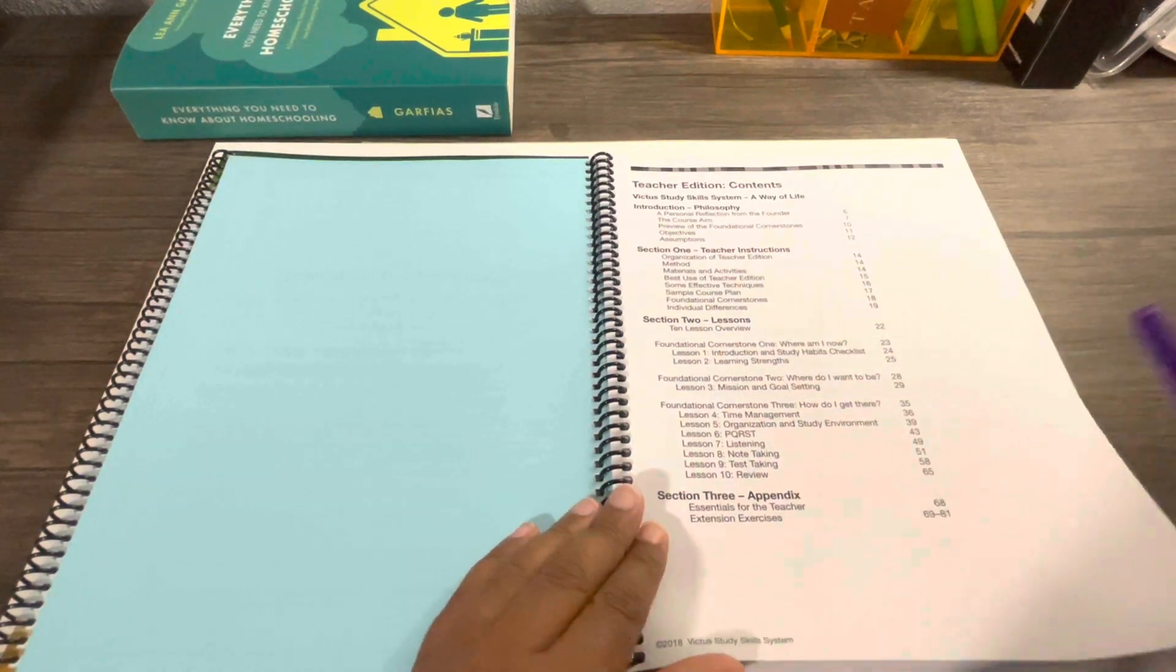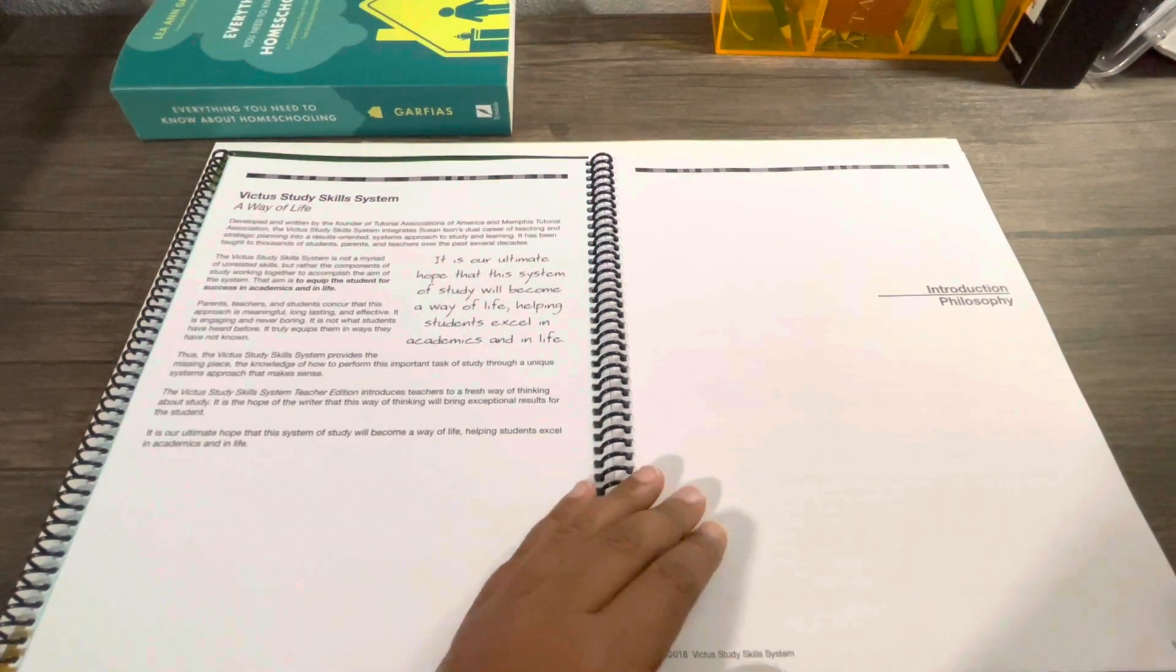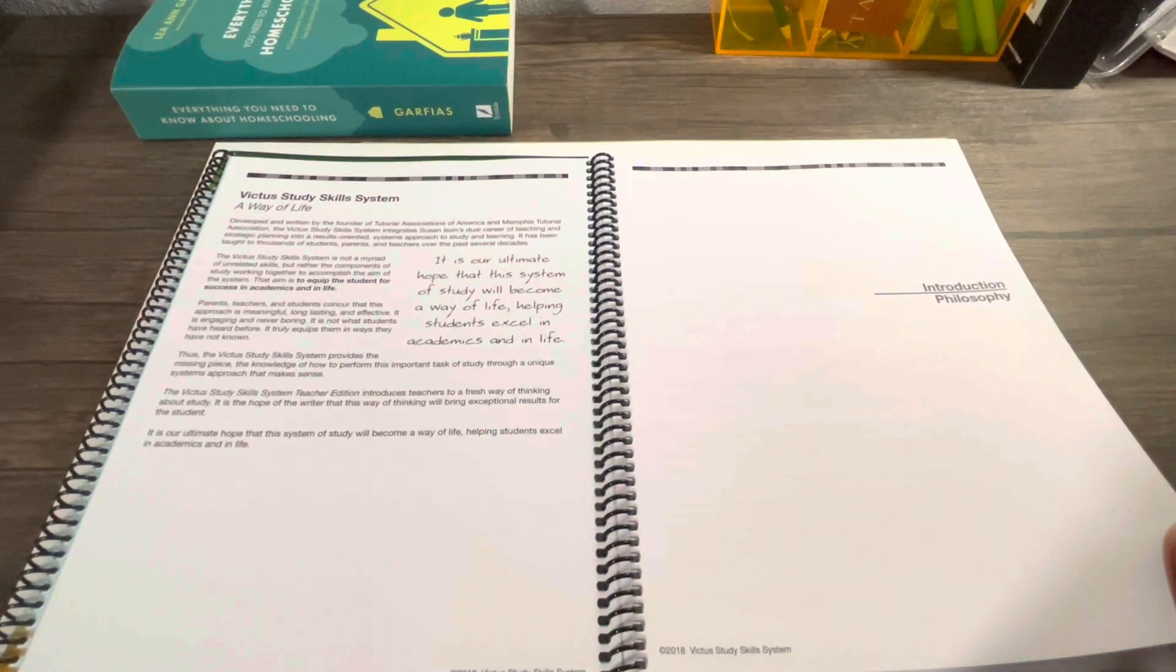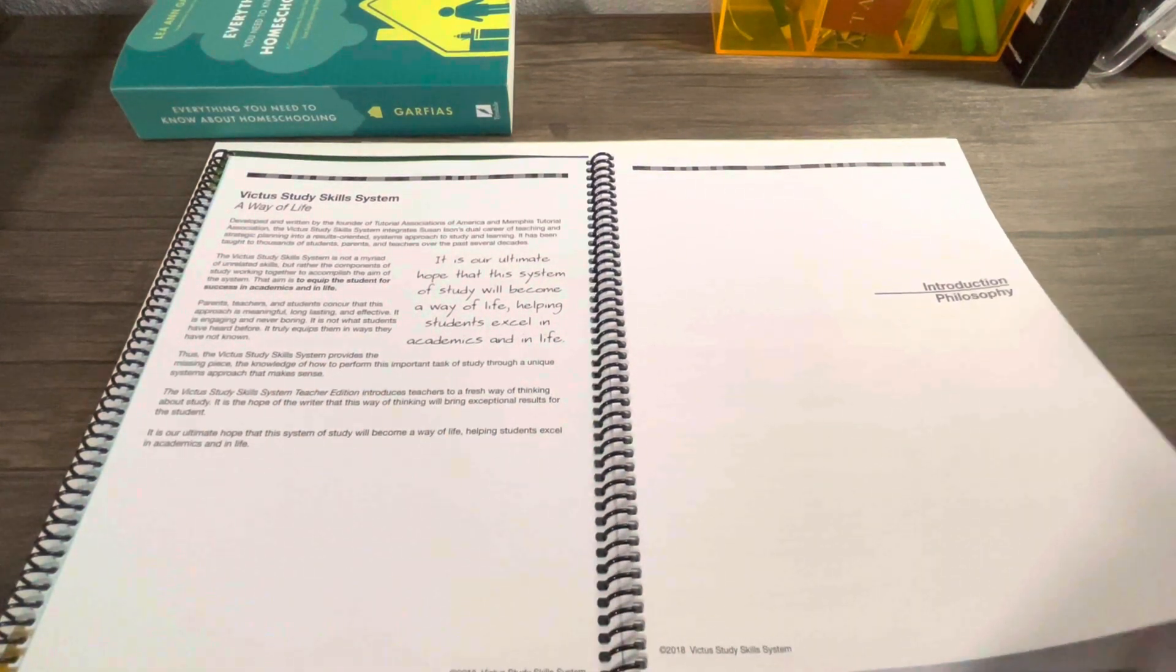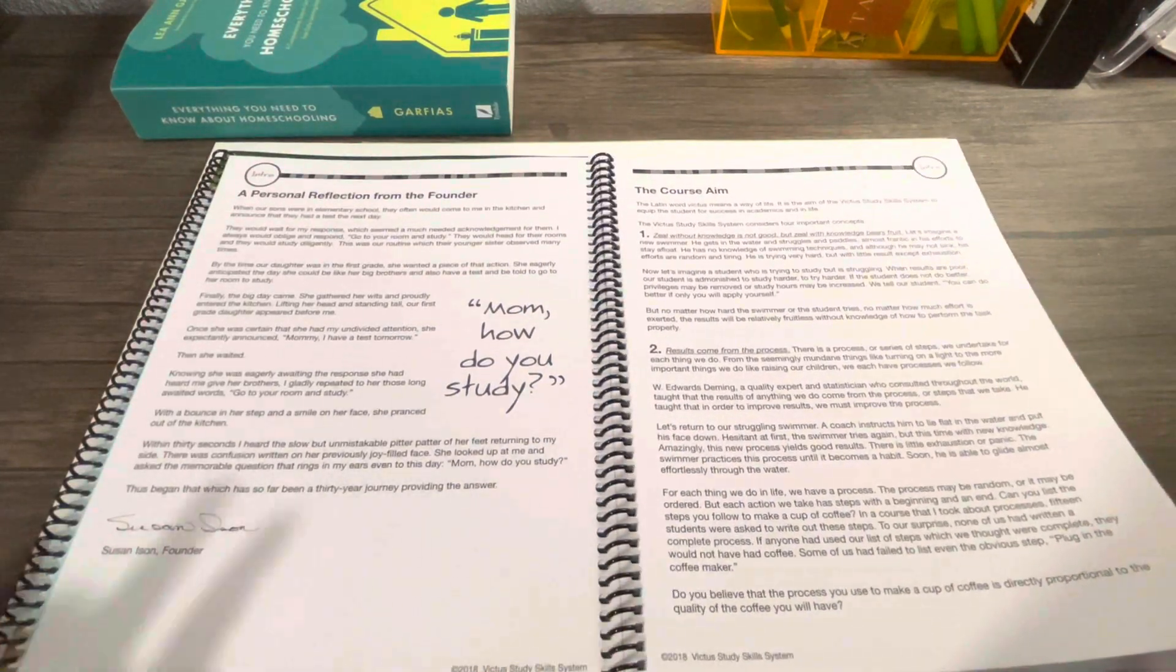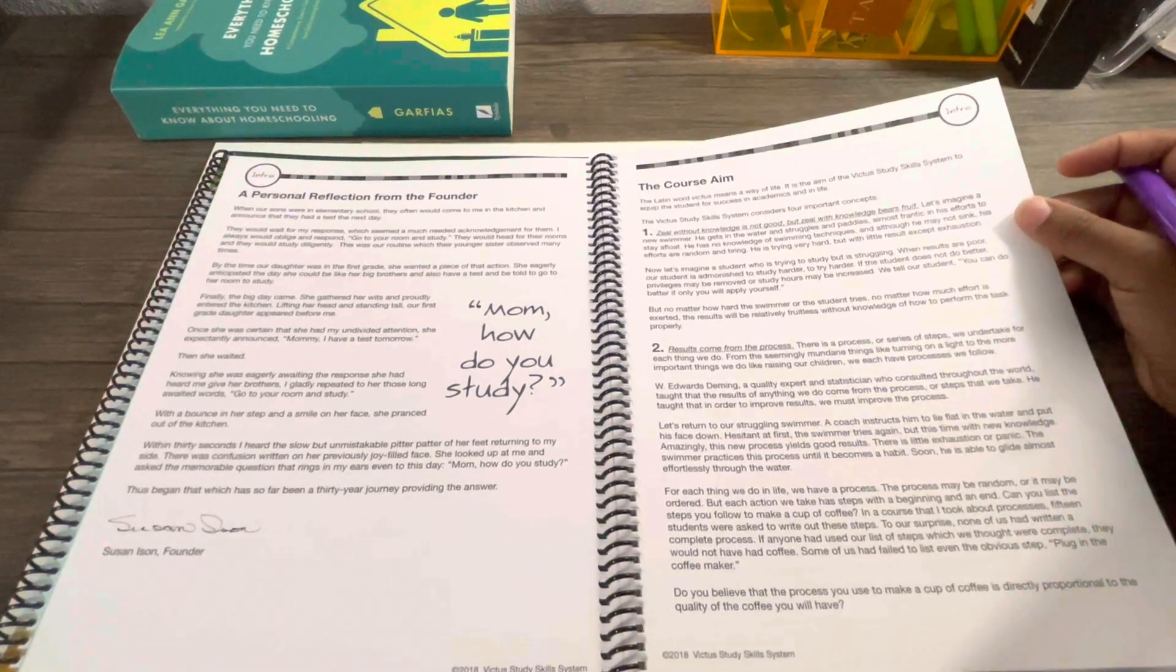As you can see, there are about nine lessons in here. In the instructions it shows you how to organize, talks about the methods, materials, and all those good things. It says Victus Study Skills System is a way of life. This is not just something that you're going to do one time with your kids, but you are always going to review this with your kids so they can get better at doing it.